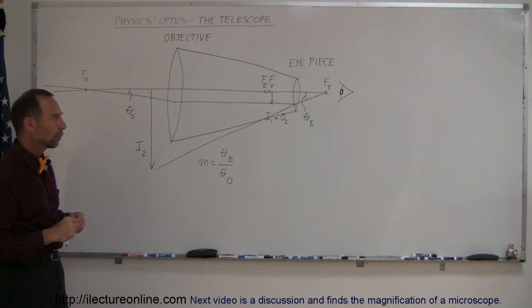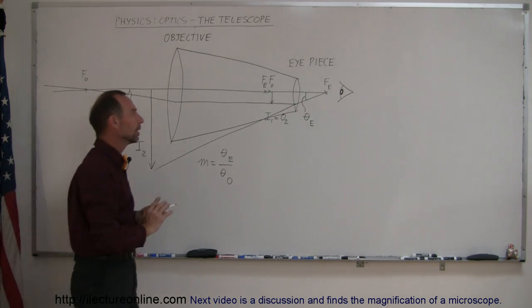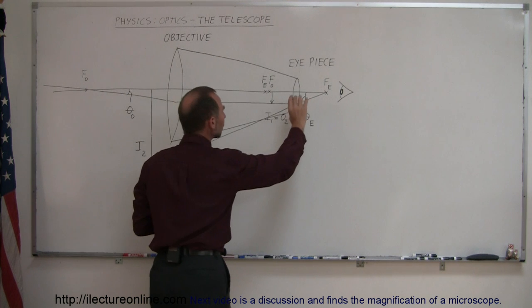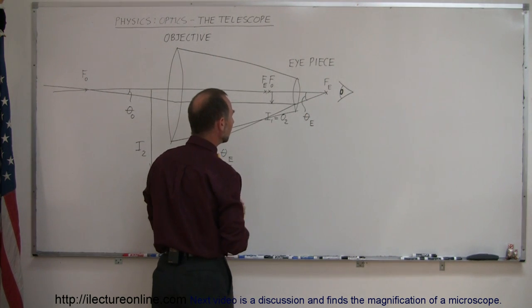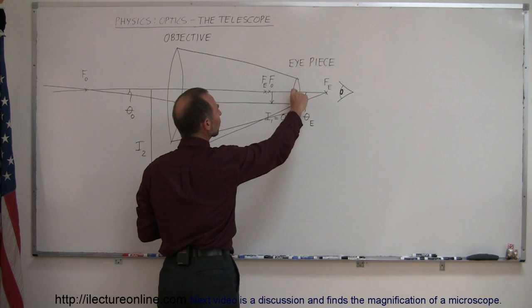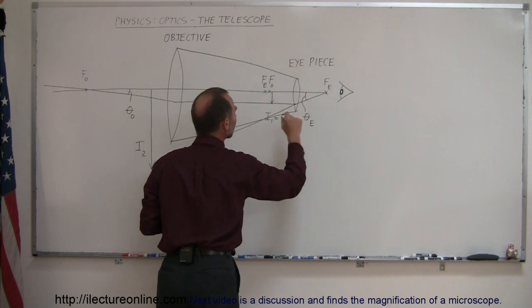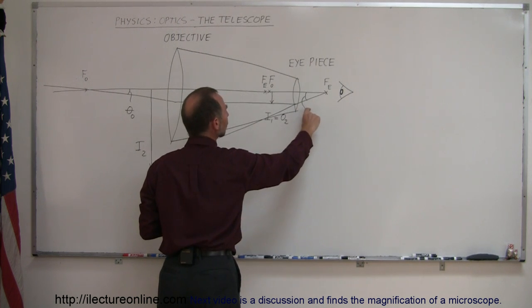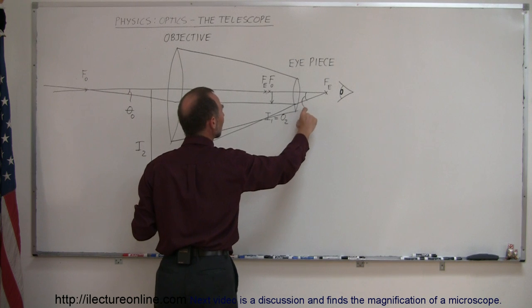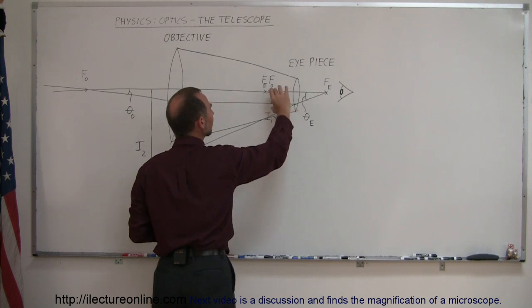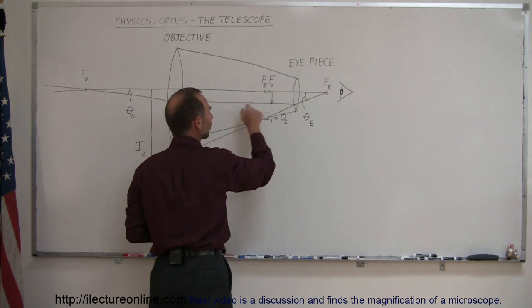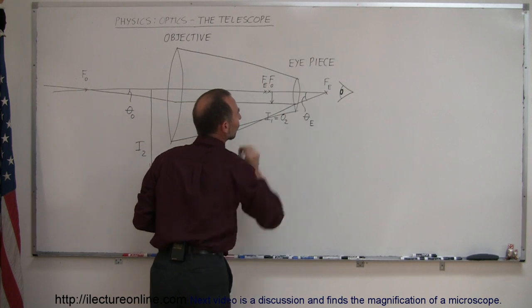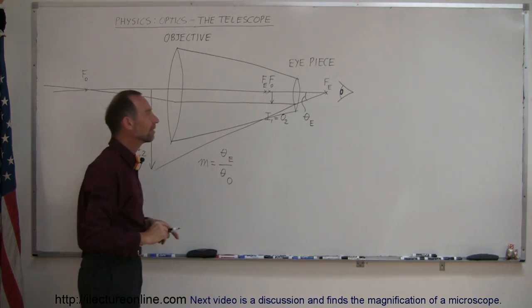For small angles, the angle theta is equal to the tangent of that angle theta. The definition of tangent is opposite side over adjacent, so the angular size of the image formed by the eyepiece can be defined as the height of the image formed by the first lens divided by the focal distance of the second lens.